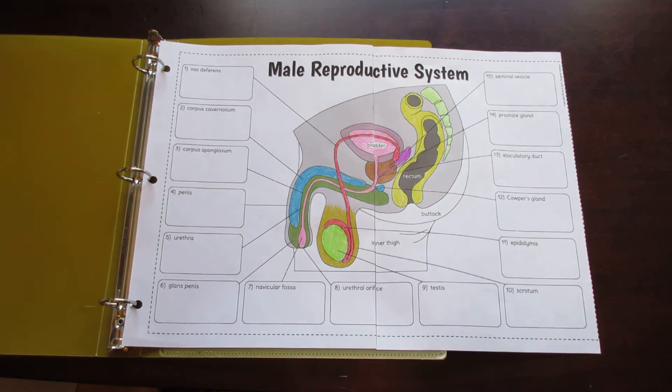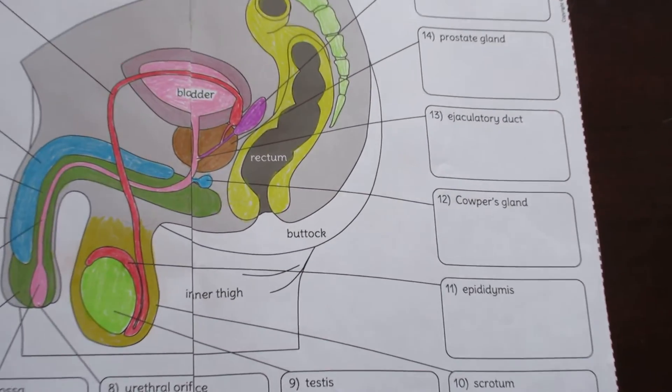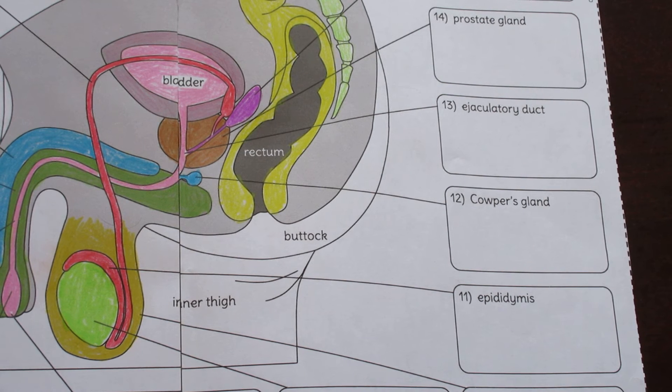Each structure connects to a numbered description box. I'll zoom in so you can take a better look. And these description boxes have labels.